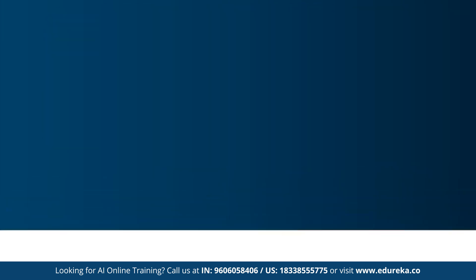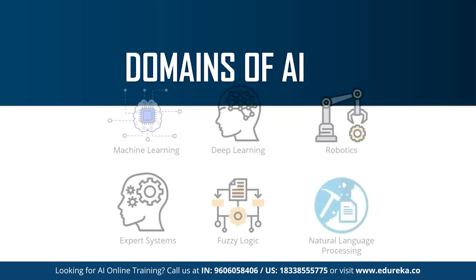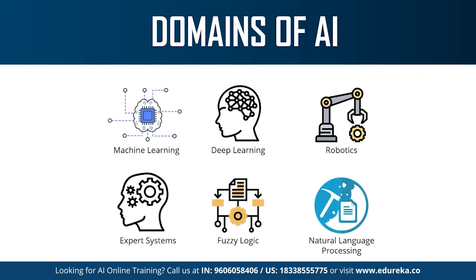Moving on to the last topic of today's session: the different domains or branches of artificial intelligence. Artificial intelligence can be used to solve real-world problems by implementing machine learning, deep learning, natural language processing, robotics, expert systems, and fuzzy logic. Recently, AI has also been applied in computer vision and image processing. These are the different branches that AI uses in order to solve problems.